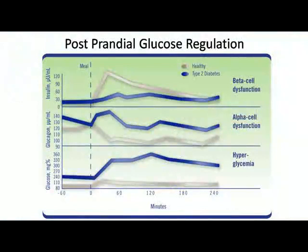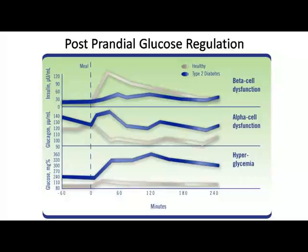Three graphs are shown — normal and what happens in diabetes. Yellow is healthy and dark violet color is Type 2 Diabetes. In Type 2: beta cell dysfunction — in a healthy person beta function is normal, so insulin is secreted normally after a meal. If there is beta cell dysfunction, the opposite occurs. Alpha cell dysfunction in Type 2 also shows the opposite pattern — glucagon is elevated. So there is hyperglycemia in Type 2 Diabetes due to these two mechanisms.